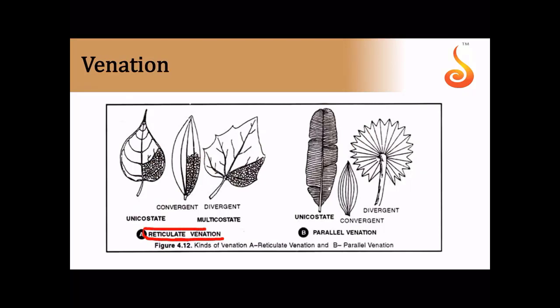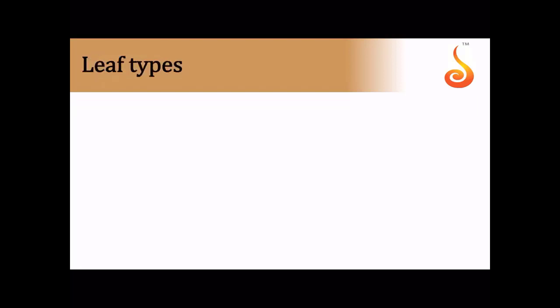Venation refers to the arrangement of veins on the leaf surface. If the veins form a spider-web-like pattern, it is called reticulate venation. If the veins are parallel to one another, it is referred to as parallel venation. The best example of parallel venation is the banana leaf, where all veins are arranged parallel to each other and at right angles to the midrib.